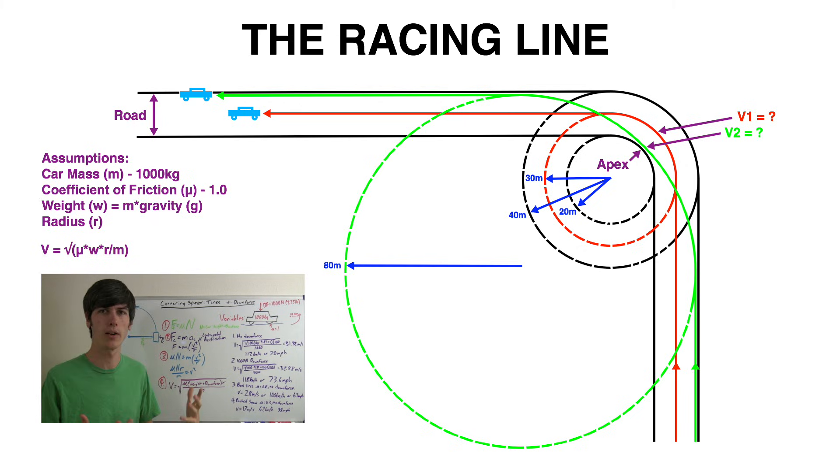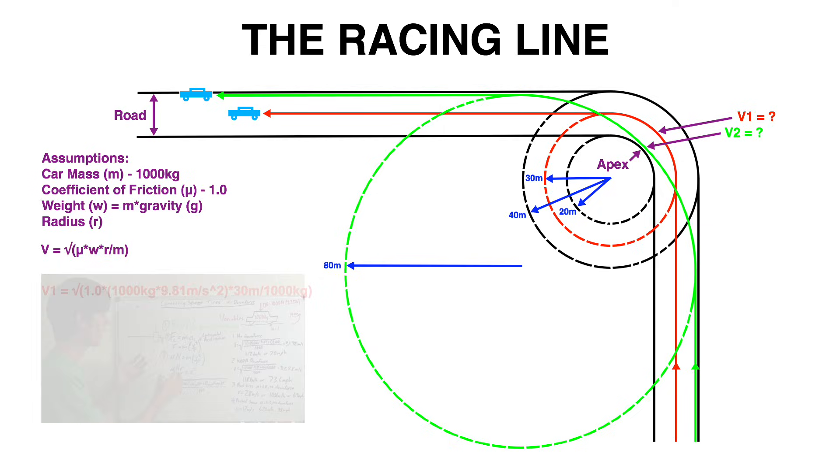We'll start out with the equation velocity equals the square root of the coefficient of friction multiplied by the weight of the vehicle multiplied by the radius the vehicle is traveling divided by the mass of the vehicle. This equation is derived in my video on cornering speed which is linked in the video description where you will also find a link for more information on the traction circle.